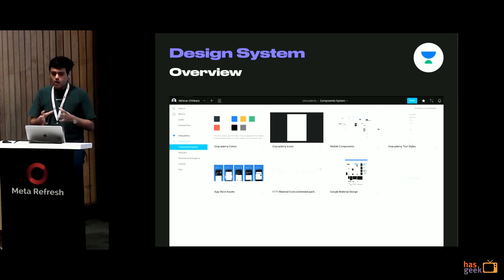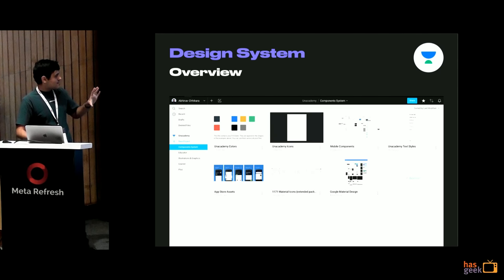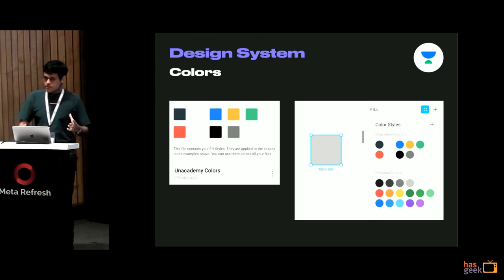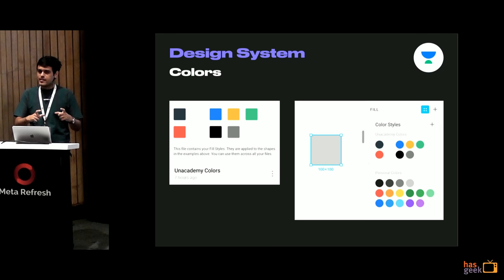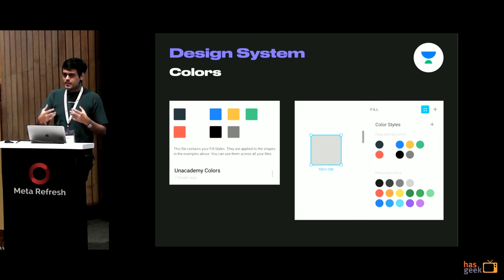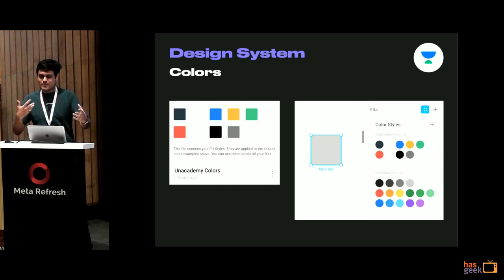Now let me give you an overview of our design system — how we've structured it and what the parts are. The design system is one of the projects in Figma that everybody has access to, though only one or two designers can edit it. We have a fixed set of colors with names that are consistent in the design files as well as in the React Native code base. It's never a case where there are multiple shades of green just because slippage happened over time.